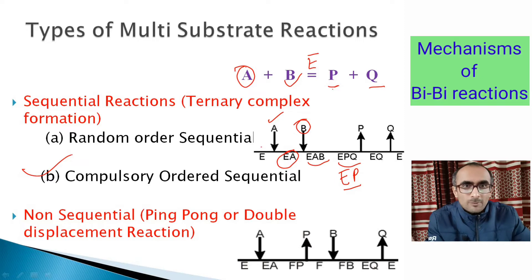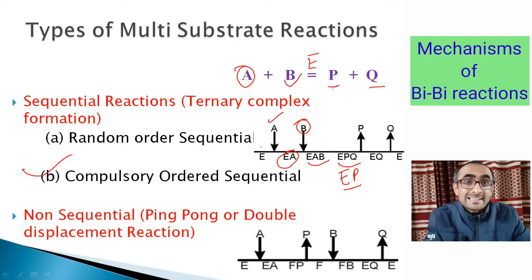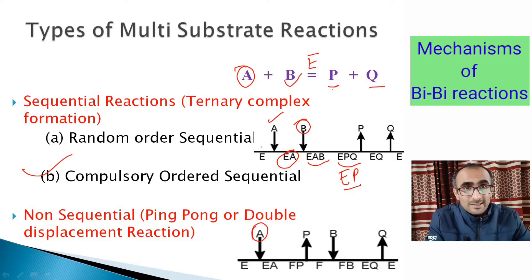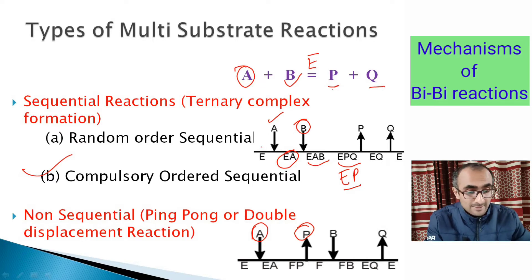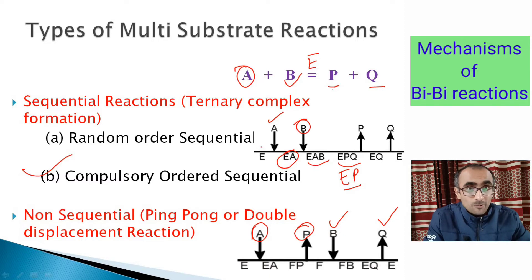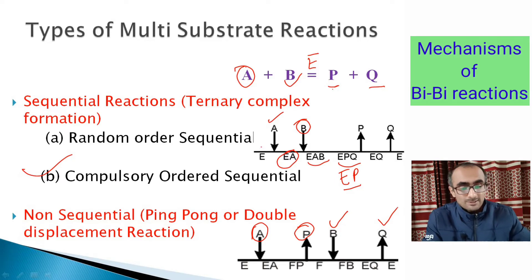The second category is non-sequential reactions, also known as double displacement or ping-pong reactions. Here the sequence of substrate binding and product release is intermixed: substrate A binds first, A is converted to product P which is released, then second substrate B binds to the enzyme, B is converted to product Q, and Q is released. So there is a mixing of substrate binding and product release.